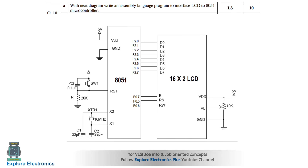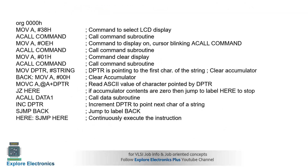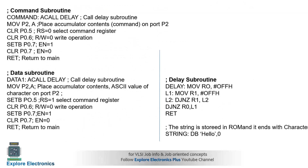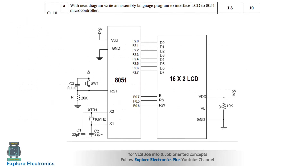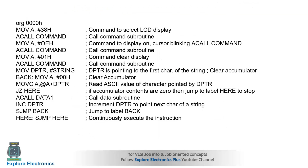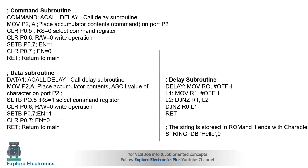The next question asks to write an assembly language program to interface an LCD to the 8051 microcontroller with a diagram. A 16x2 LCD is shown with port connections. The assembly language program requires a command subroutine, a data subroutine, and a delay subroutine for the interfacing.